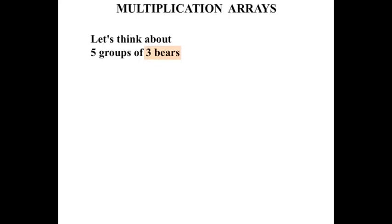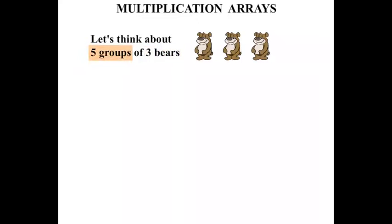In this lesson we look at Multiplication Arrays. Let's think about five groups of three bears. So three bears firstly: one, two, three. And we're going to have five groups of them.